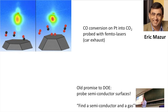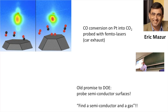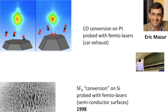He told his PhD student: go into the lab and find me a semiconductor and an interesting gas, because CO on silicon he knew wouldn't give a lot. Imagine you're a PhD student and the professor tells you to find a semiconductor and a gas. Well, silicon is abundant, so this student found a silicon surface. And he found SF6 as the gas — you know SF6 from your first year of chemistry, the octahedral structure where sulfur has an expanded d-orbital shell.